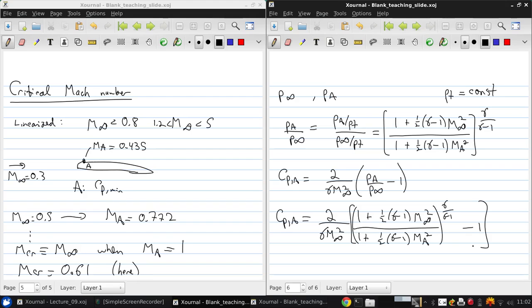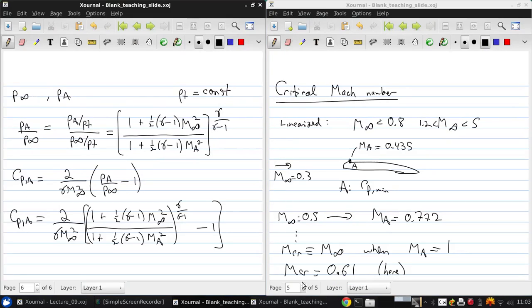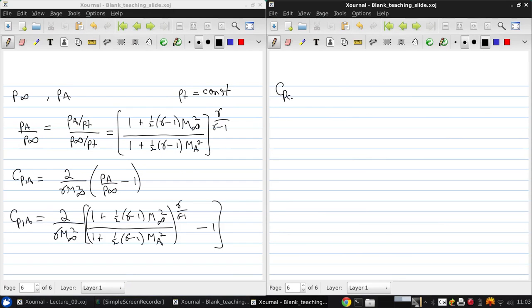This is a lot like a compressible flow Bernoulli equation. It relates Mach numbers and pressures throughout the flow for a flow with constant stagnation pressure, like we have in a flow that's isentropic. What we want to know is what the value of CPA is when the Mach number at A is 1. This brings in the concept of the critical pressure coefficient, CPCR.